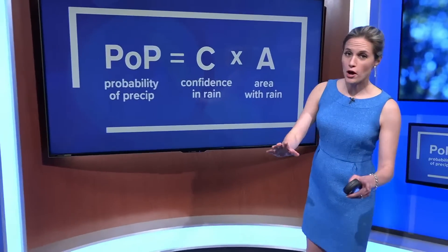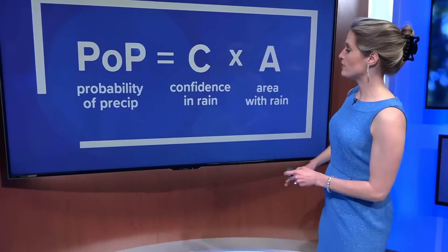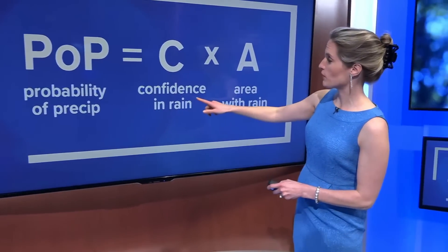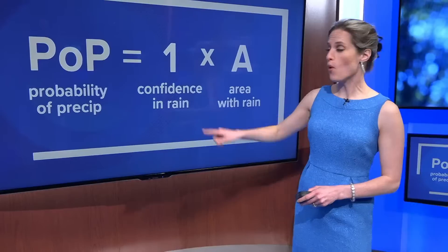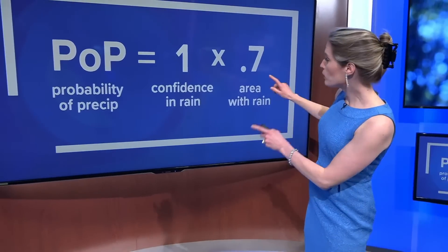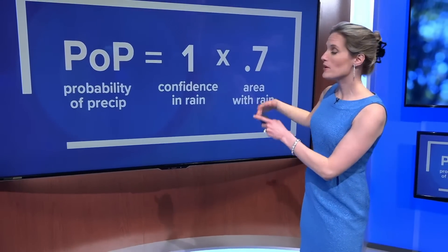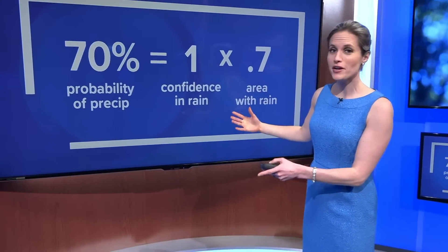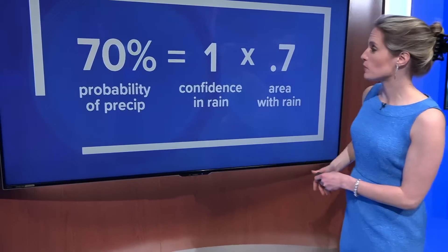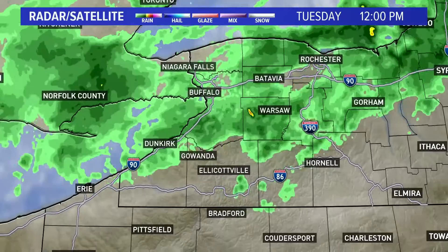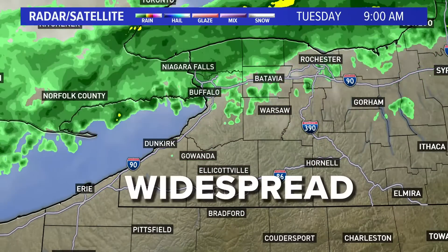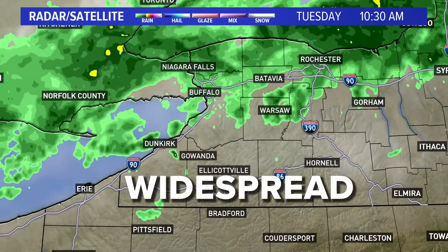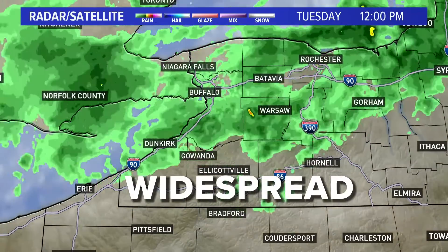So if I'm 100% confident in our chance for rain, this number becomes a 1, and what I'm really telling you is the area that we'll see the rain — 70%. A situation like that means the rain is going to be widespread and a little easier for us to track.